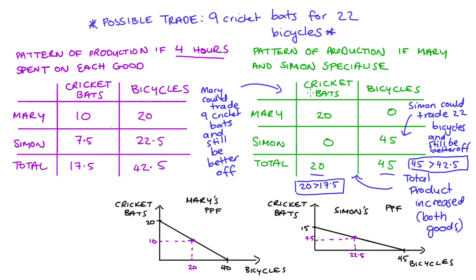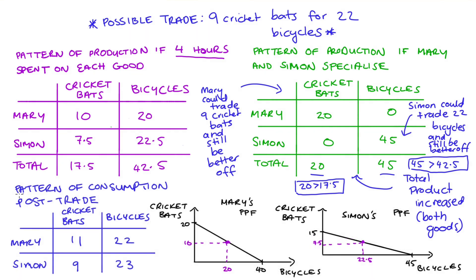If that trade happened, we'd be left with the pattern of consumption shown in the blue table on the bottom left-hand corner. Mary would have 11 cricket bats and 22 bikes, because she traded nine of her 20 cricket bats for 22 bikes. Simon would have nine cricket bats — he traded those nine cricket bats for 22 bikes — so he's left with 23 bikes because he had 45. This trade puts both Mary and Simon's consumption ahead of their consumption when they didn't trade and didn't specialize. Going back to the PPFs, the bundles of consumption associated with Mary and Simon's post-trade consumption are both outside the original PPFs.